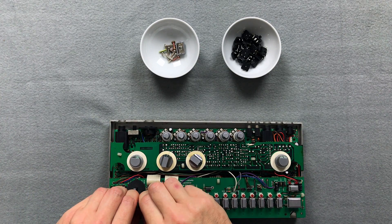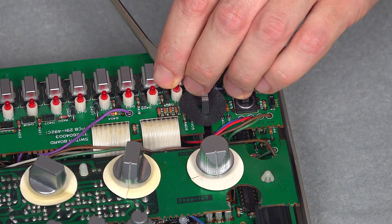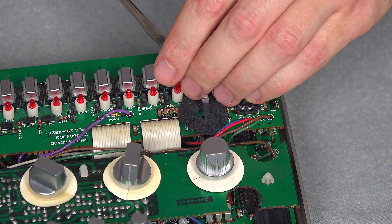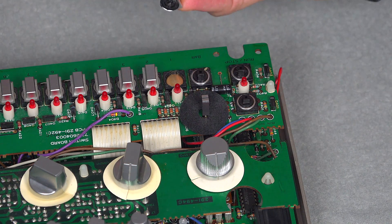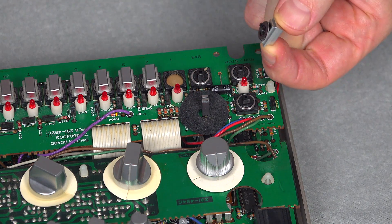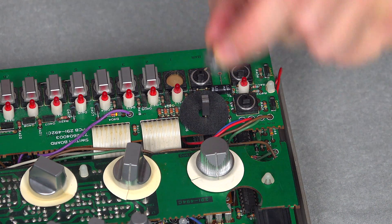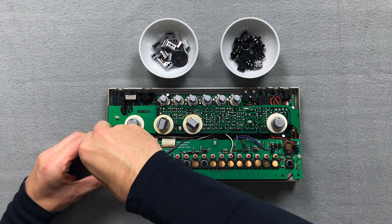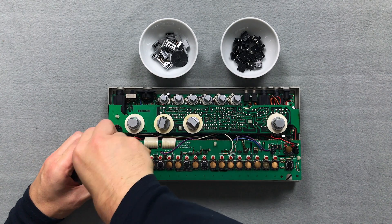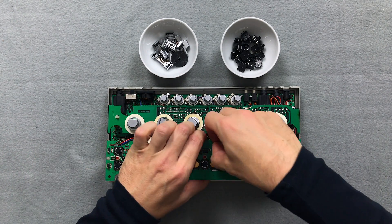Then take off the switch caps of the push buttons. Some of my switch caps are so tight that the buttons fall apart when you remove them. But that's no problem, because I will replace the buttons anyway. After all switch caps are removed, I take the PCB out of the three plastic holders and turn the solder side towards me.